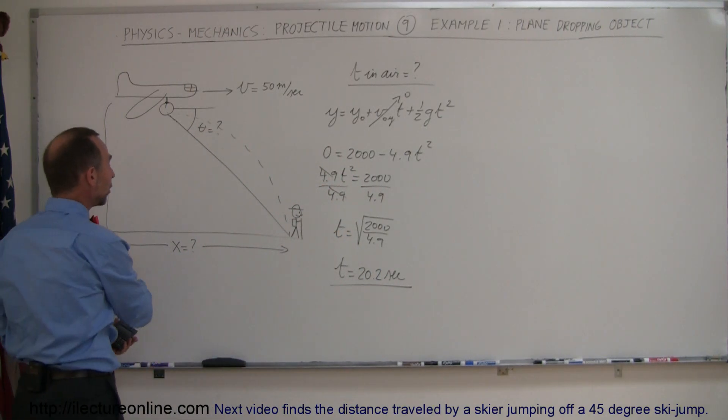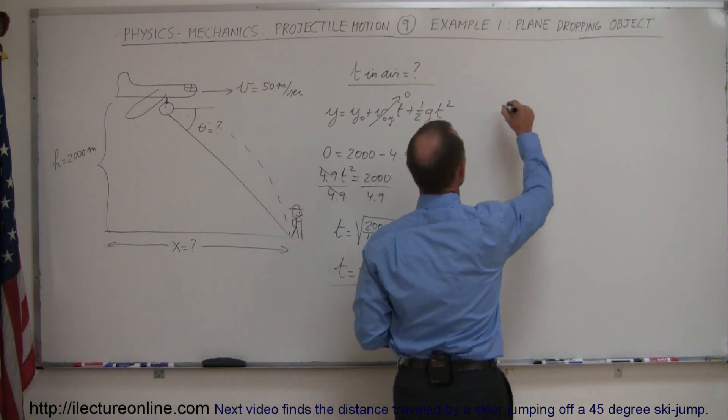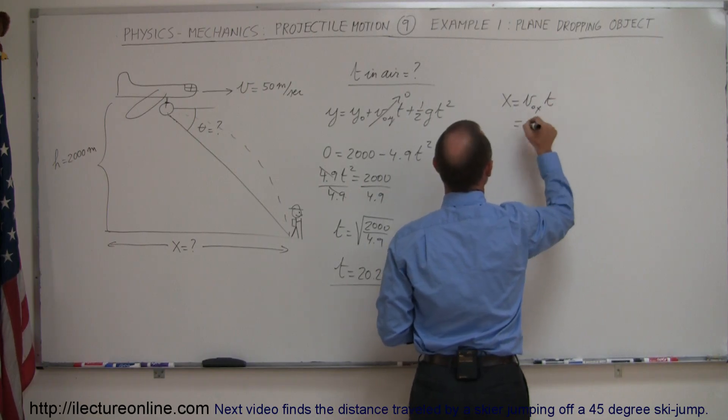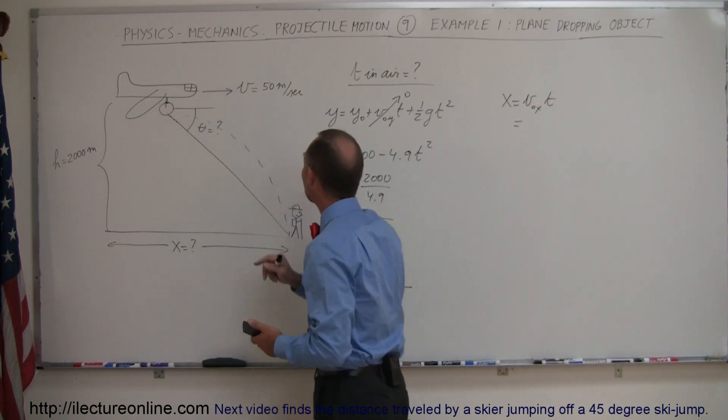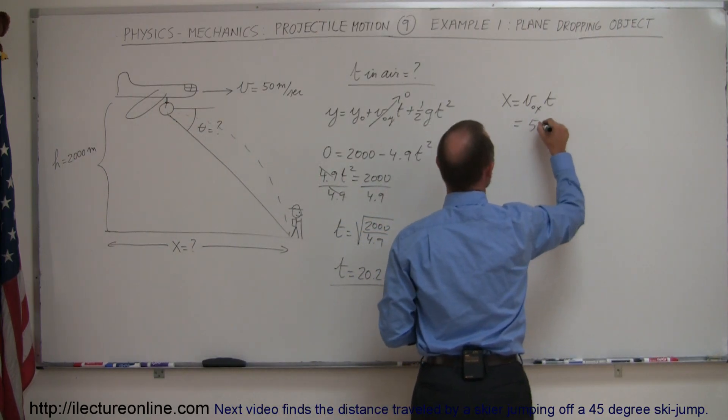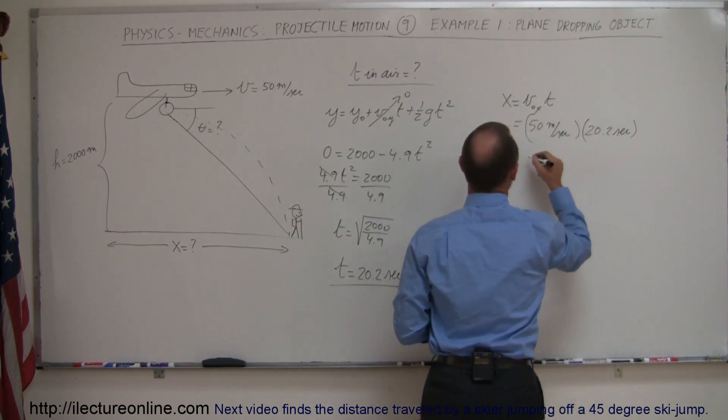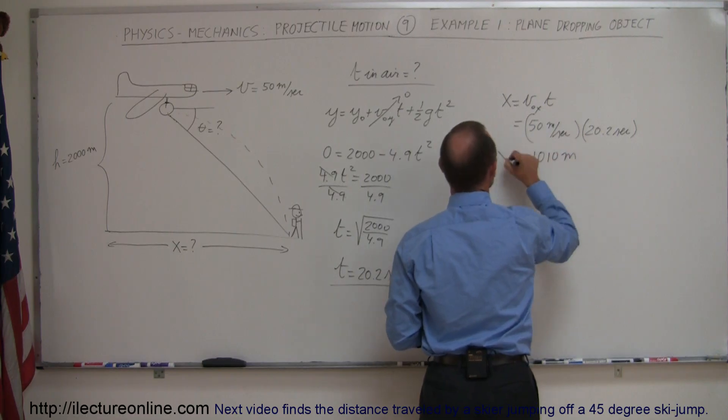Next thing we need to do is see how far that object will fly in that amount of time, so we can find that by using equation x equals v initial in the x direction times time. In this case, the initial velocity of the package is the same as the initial velocity of the plane, so it will be 50 meters per second multiplied times 20.2 seconds, and so that would be equal to 1,010 meters.